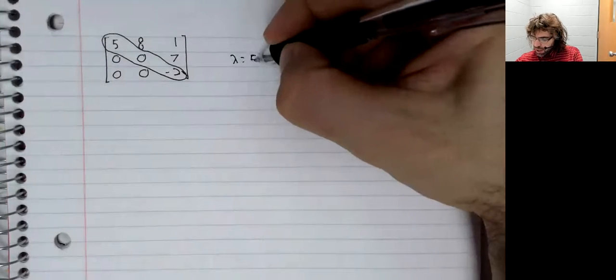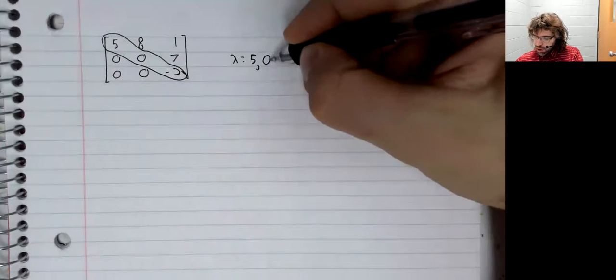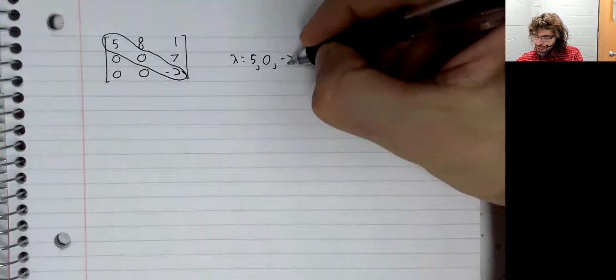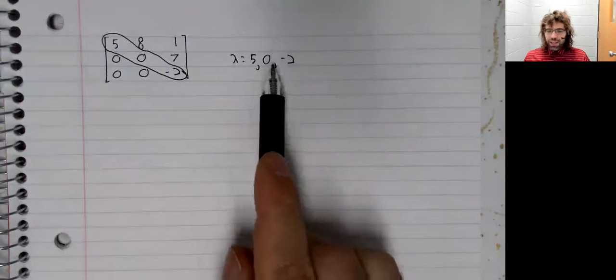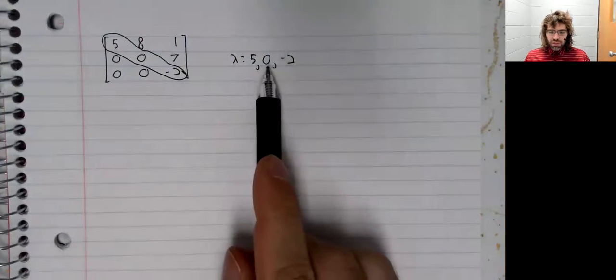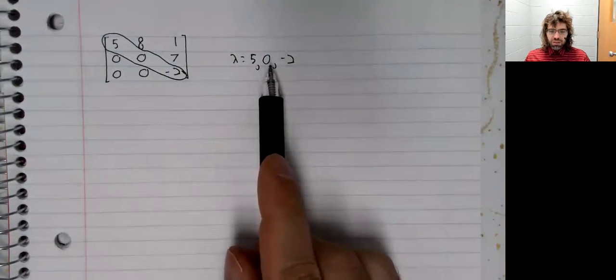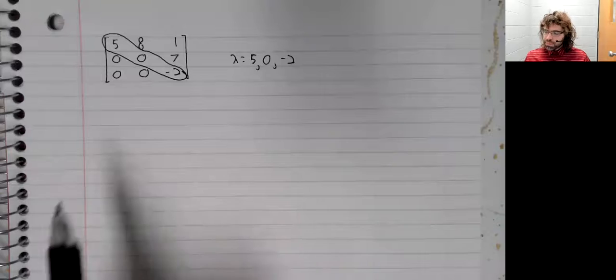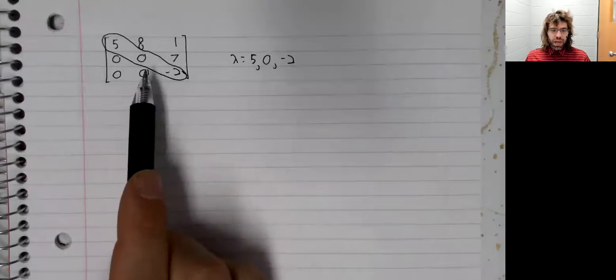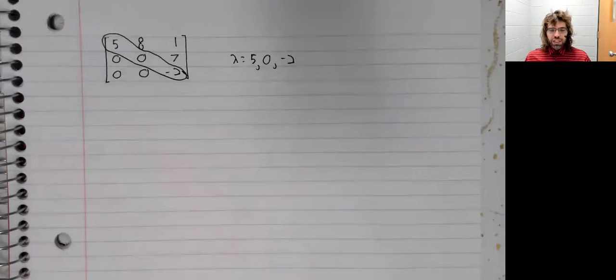The eigenvalues of a triangular matrix are the diagonal entries: five, zero, negative two. To do this diagonalization, we need the eigenvalues for matrix D, and we also need eigenvectors. Since this is three by three, we need three linearly independent eigenvectors.